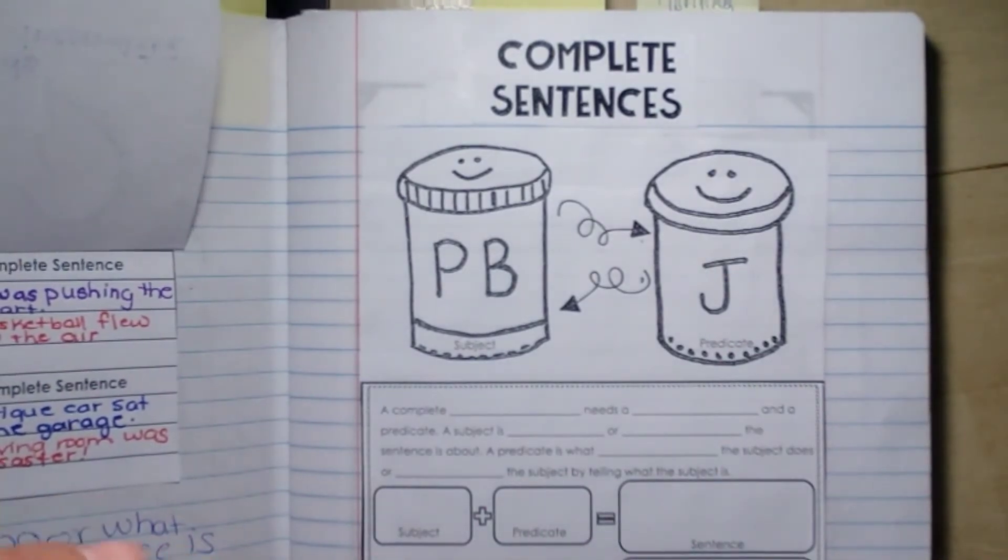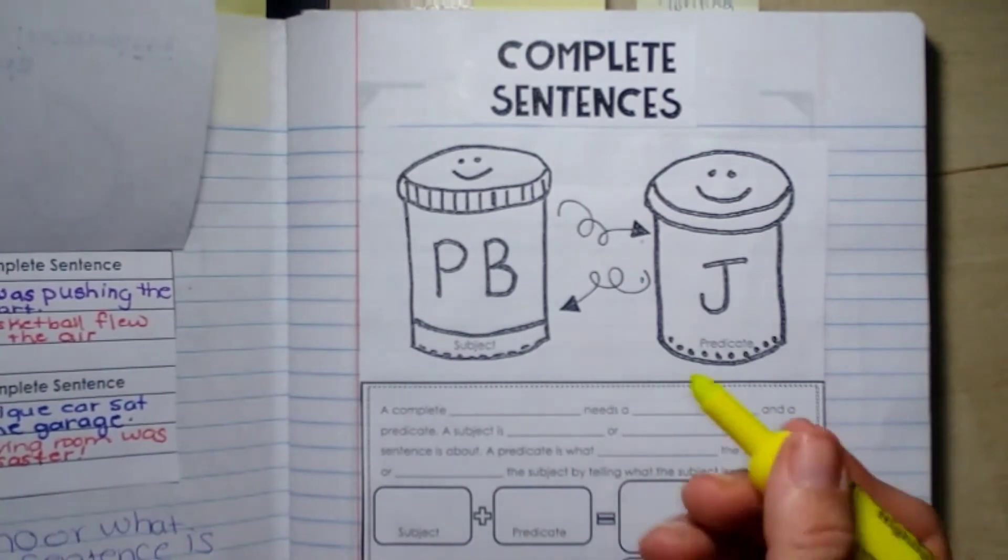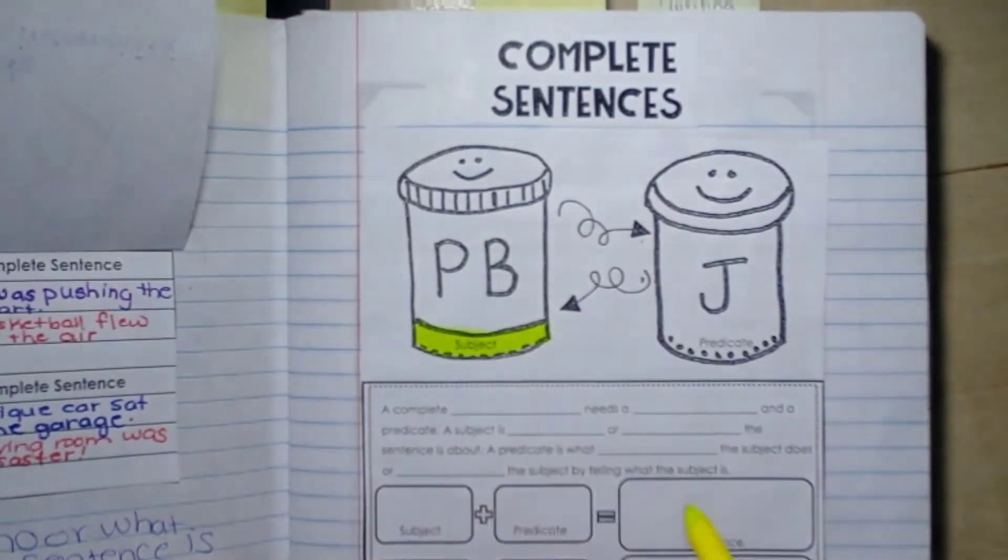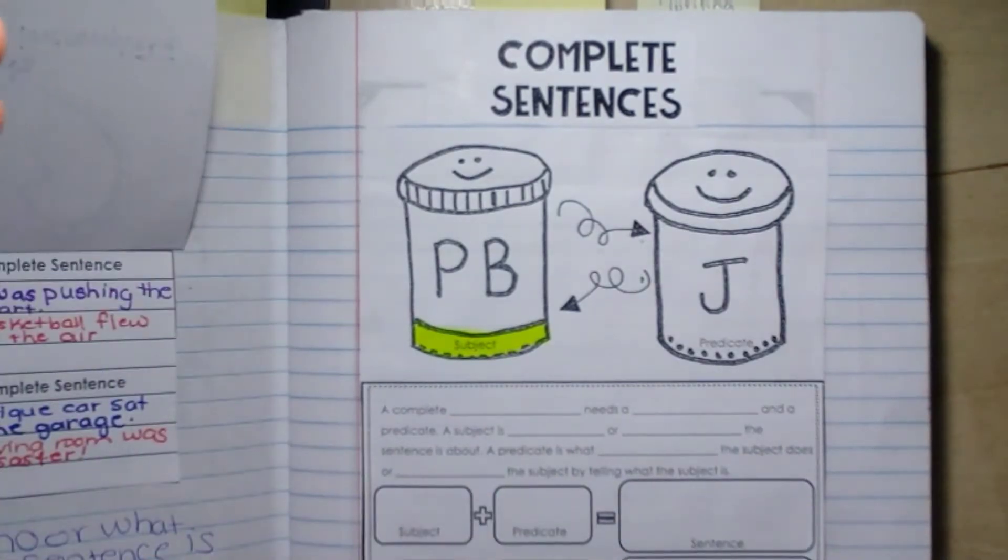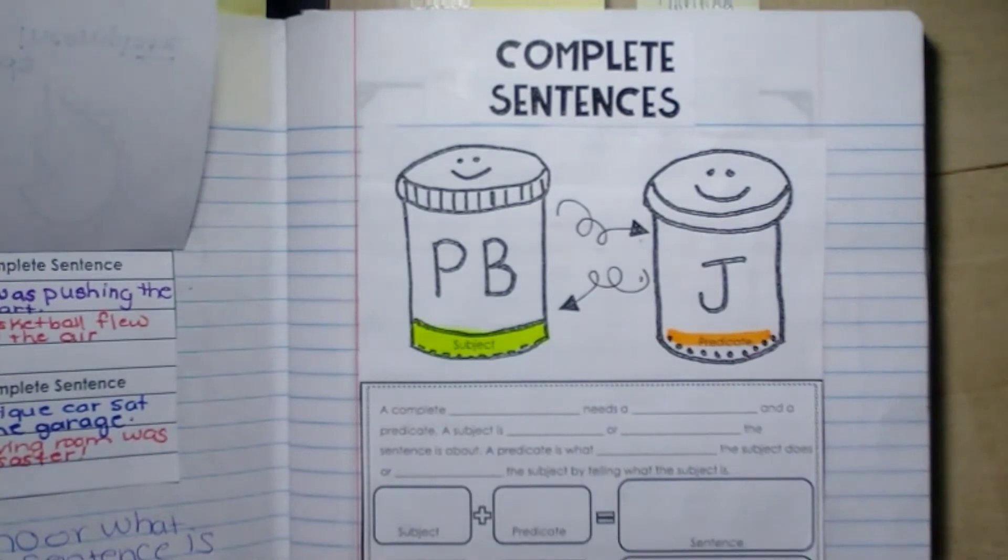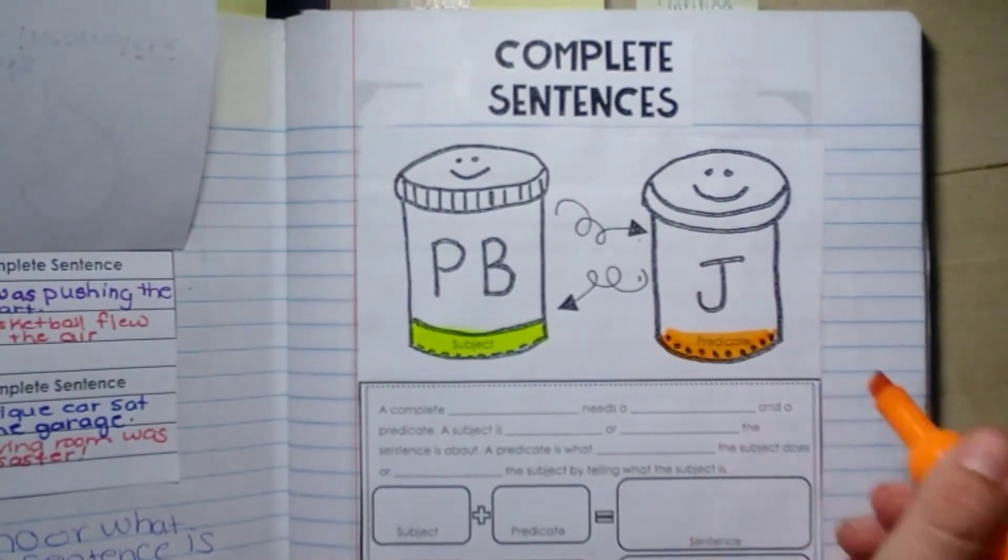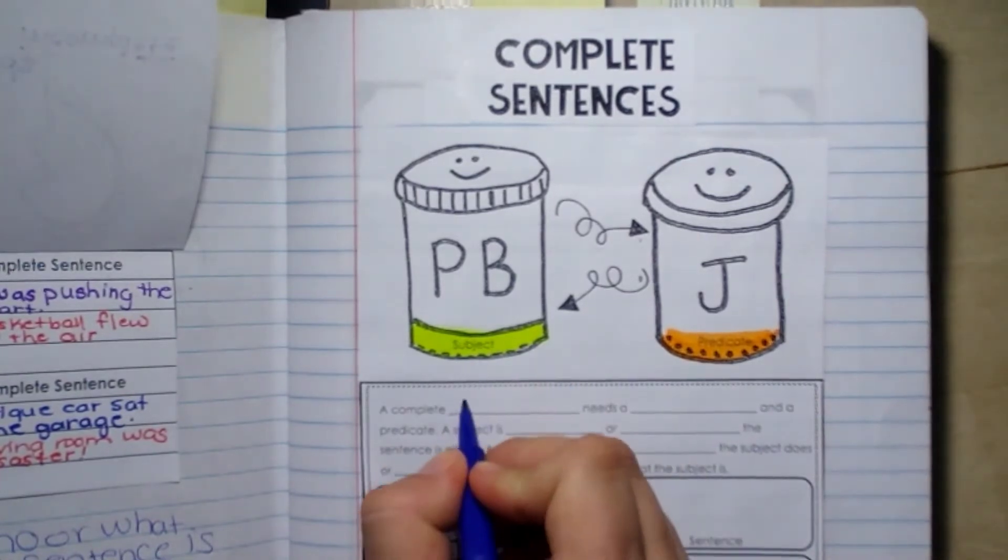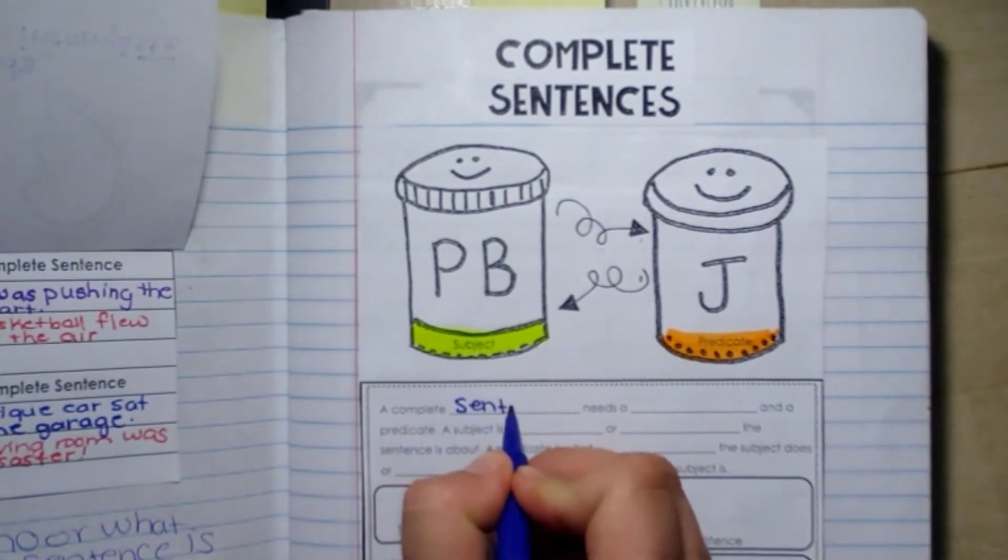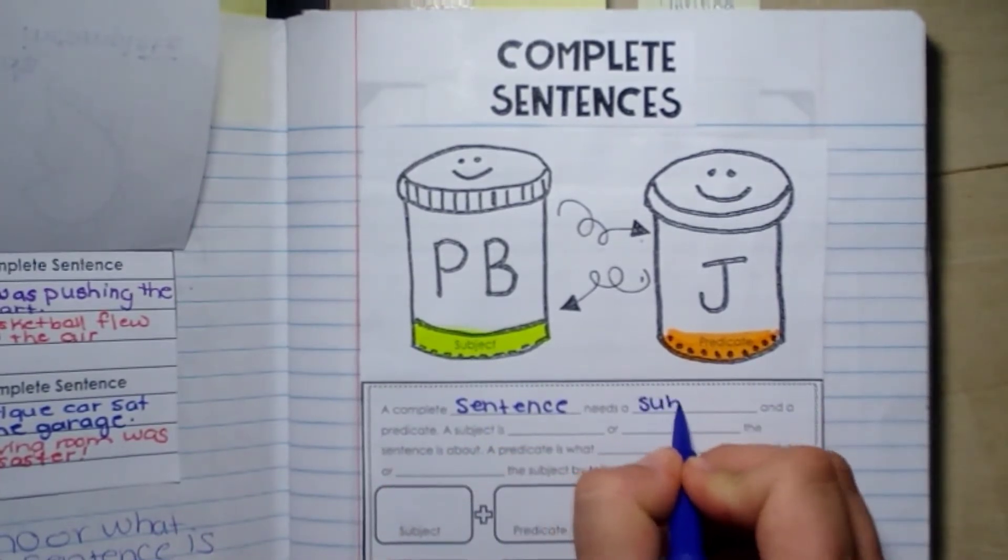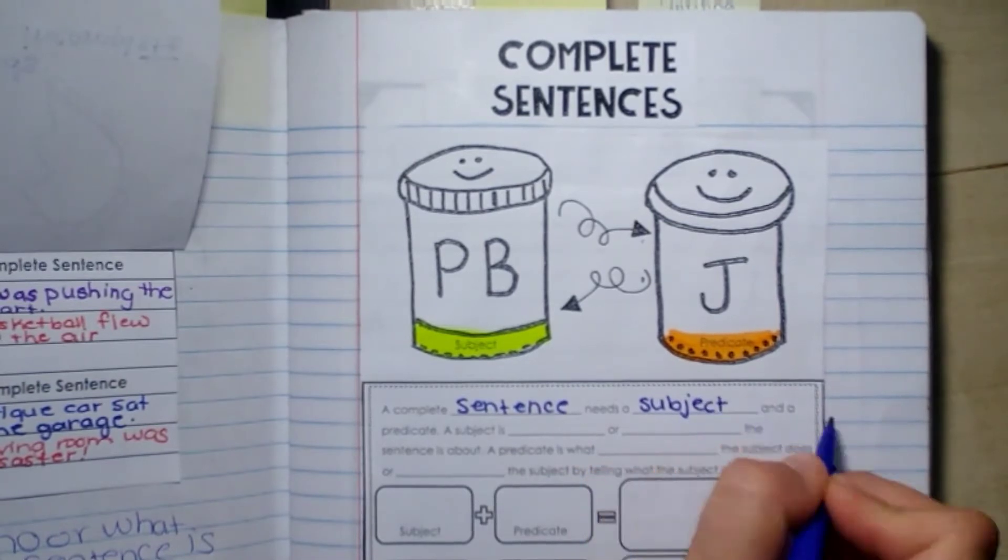Peanut butter jelly, peanut butter jelly. Okay, so we have our subject, okay, then we have our predicate. Okay, so we said earlier a complete sentence needs a subject and a predicate.